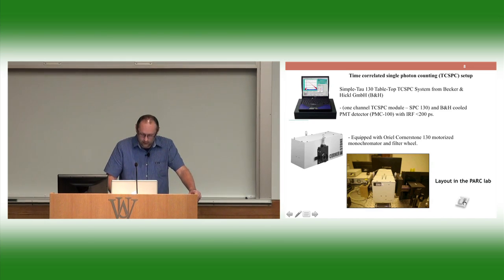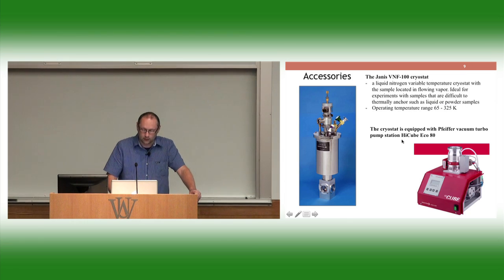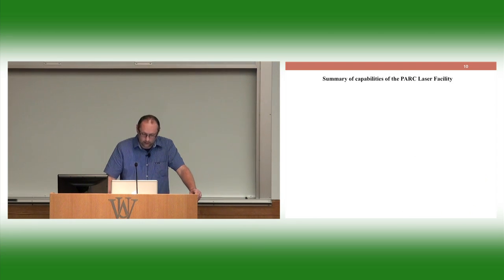That's how our lab looks right now. We have some new accessories also. The most important is our cryostat. We got liquid nitrogen cryostat from American company Janis. It's designed to work not only at the temperature of liquid nitrogen, but we have temperature controller and we can set the temperature in the broad range from 65 to 325 Kelvin. We can do temperature-dependent measurements. The cryostat is equipped with the vacuum pump, and the vacuum pump is from Pfeiffer. That's what we have in our lab now and all of them are working right now.